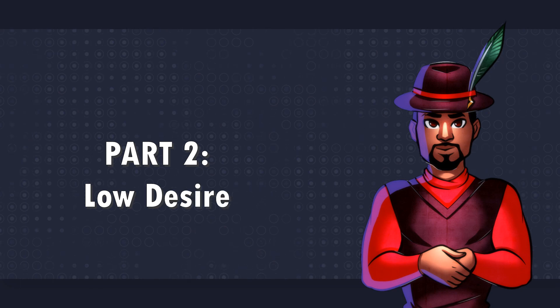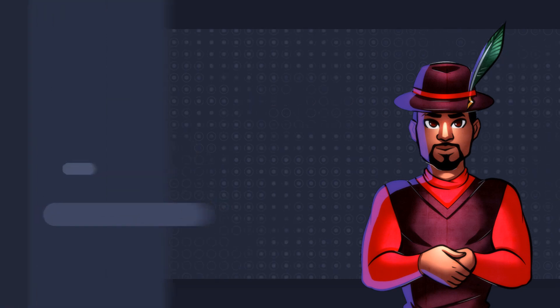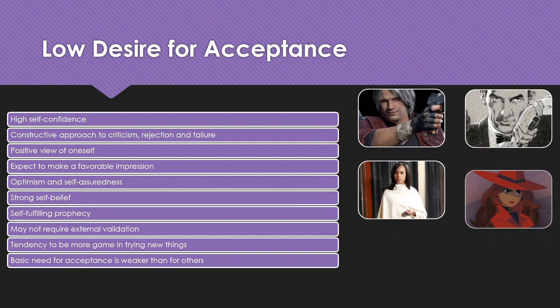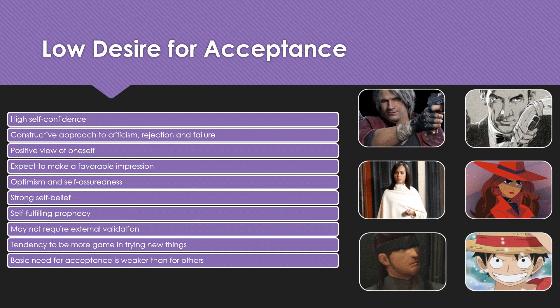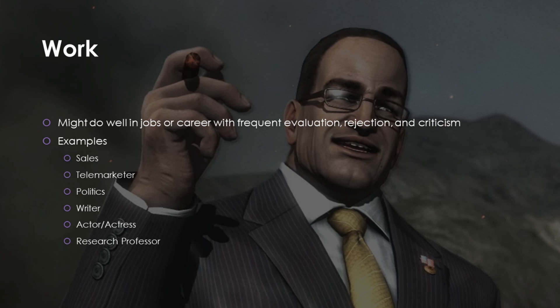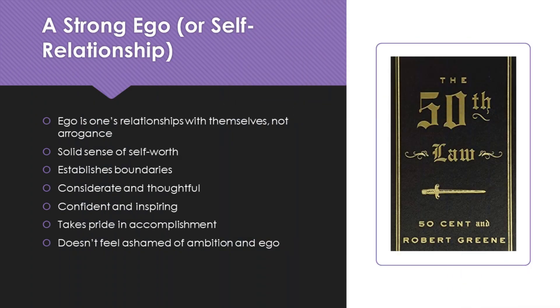Part 2: A Low Desire for Acceptance. People with a low desire for acceptance have strong self-worth, self-confidence, and resilience to criticism and rejection. They are more comfortable expressing themselves and taking risks in jobs and activities that involve evaluation, rejection, and criticism. They are more perseverant in creative fields and more comfortable with risk due to a secure sense of self. These types have a solid sense of their own value and can look at the world with a greater capacity for objectivity, which allows them to achieve a strong ego.